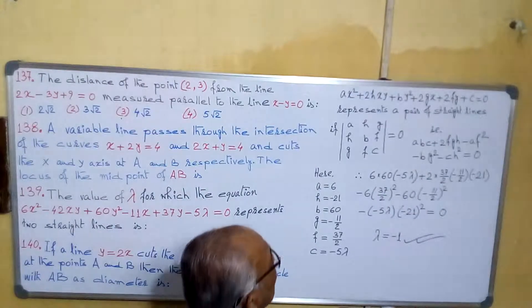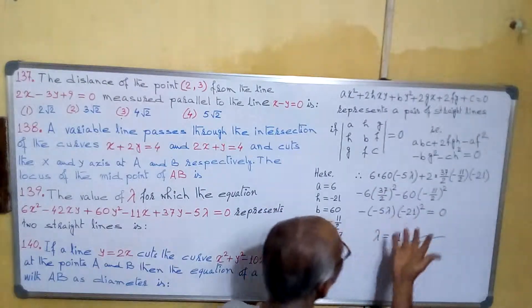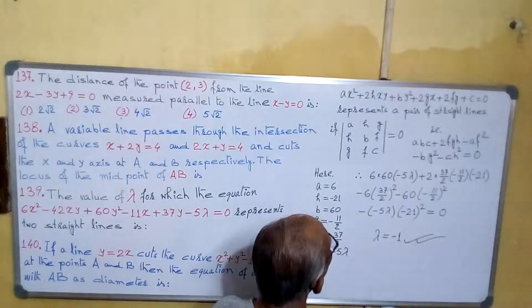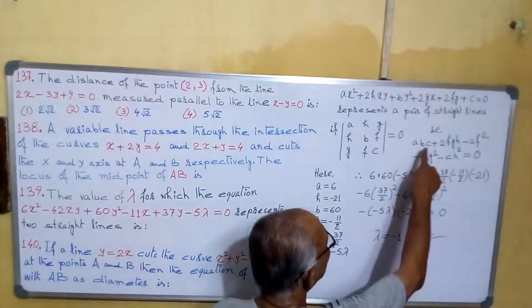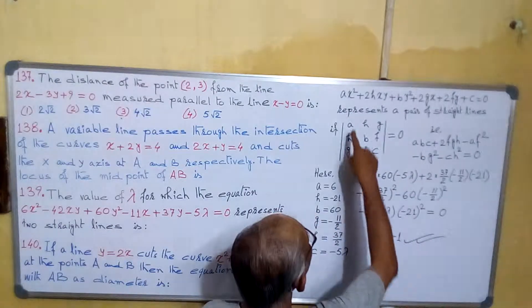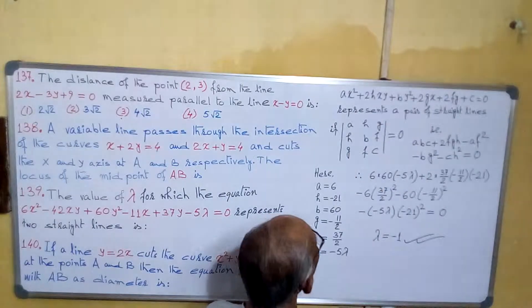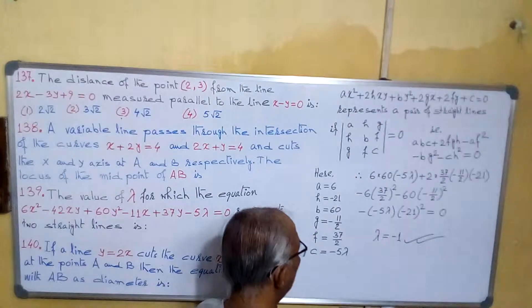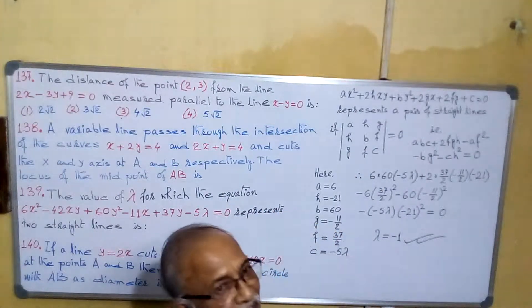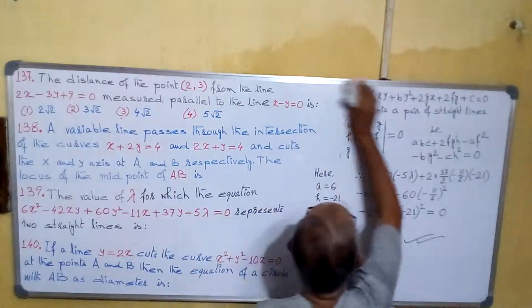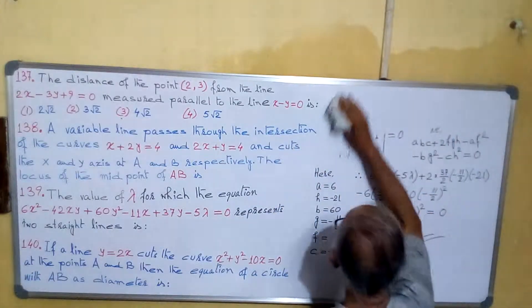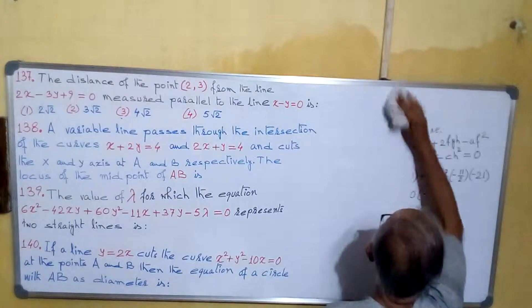Here remember, these values may not be very simple, but we have to do this calculation. Either you can use this equation directly or you can use the determinant. By using any of the two, you have to find this value. Now let us proceed to the next sum.